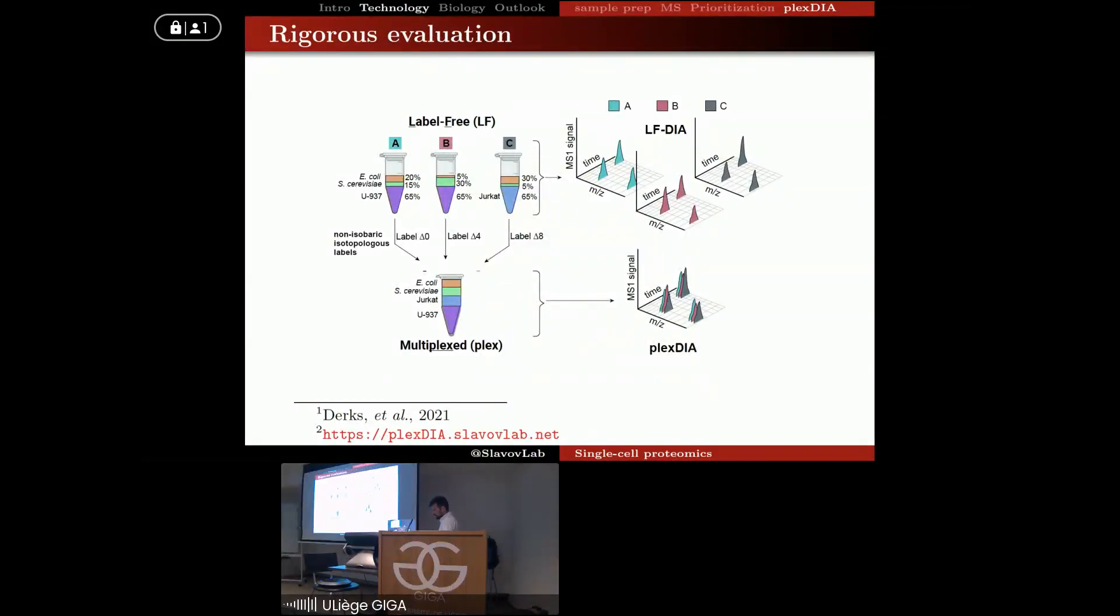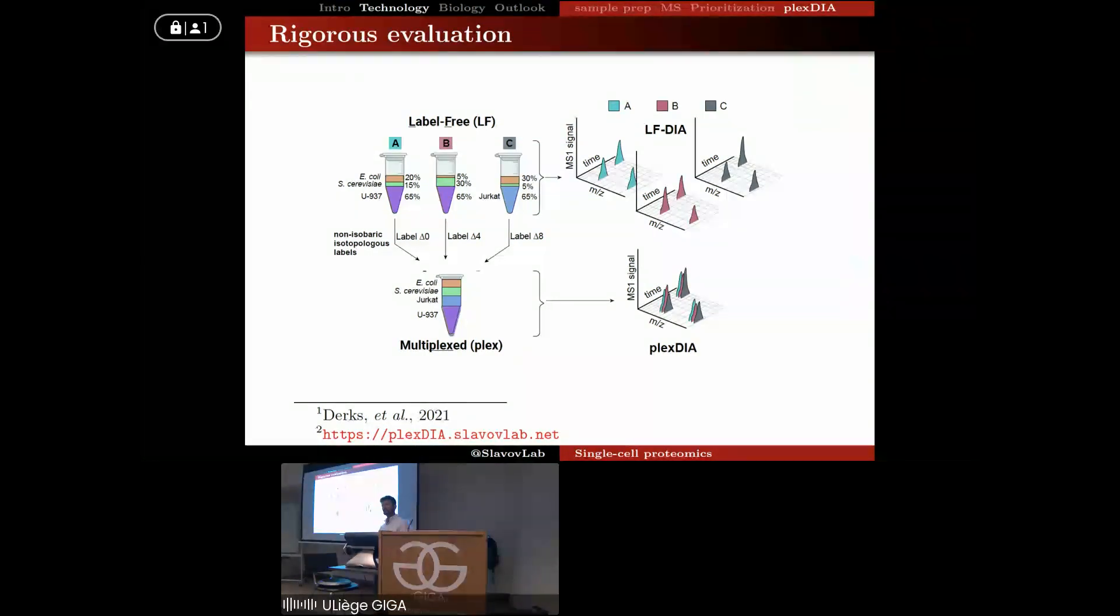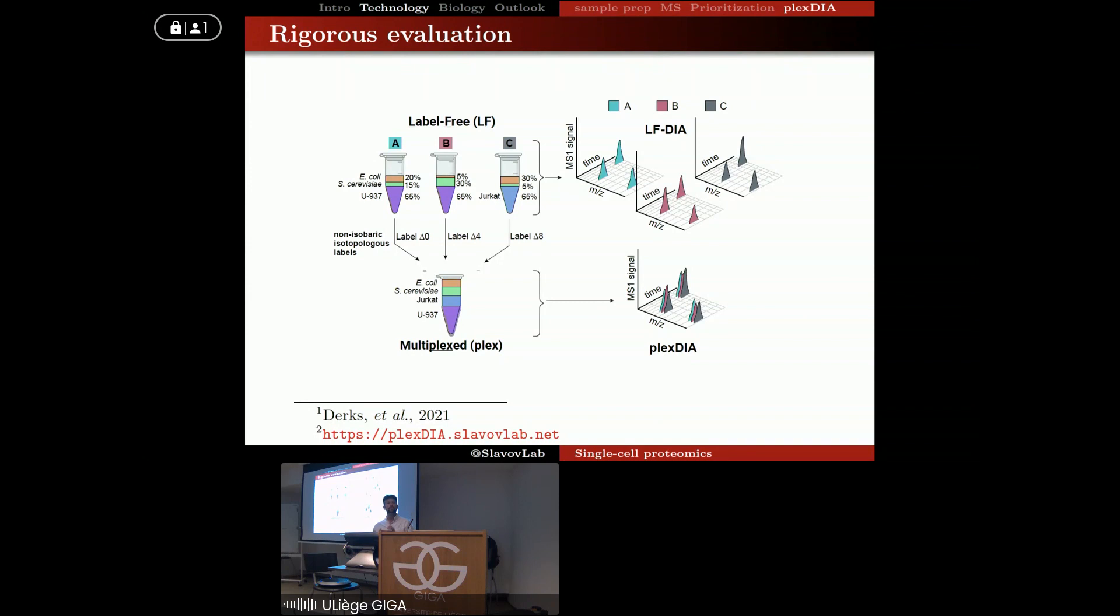And we designed this very rigorous experiment that is widely practiced in the proteomics community for benchmarking relative quantification, which involves mixing the proteomes from different species - from bacteria, from yeast, and human - into known ratios. And then we can quantify protein abundances and see if what we quantify, the ratios that we quantify, correspond to the mixing ratios. And we did that with those three samples, and then each sample was analyzed either in a label-free way without labels, or they were labeled with non-isobaric mass tags, and then upon labeling they were mixed and analyzed together. So now we're using three times less time - that's the goal here, we want to increase throughput - and the question is, can we still preserve the quantitative nature of the data and the proteome coverage?